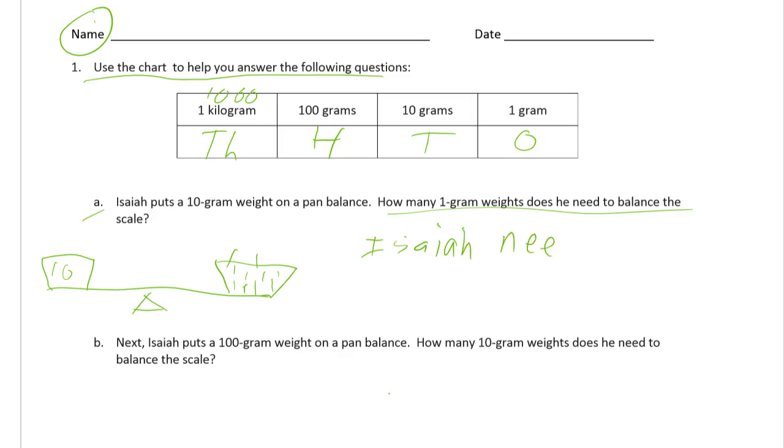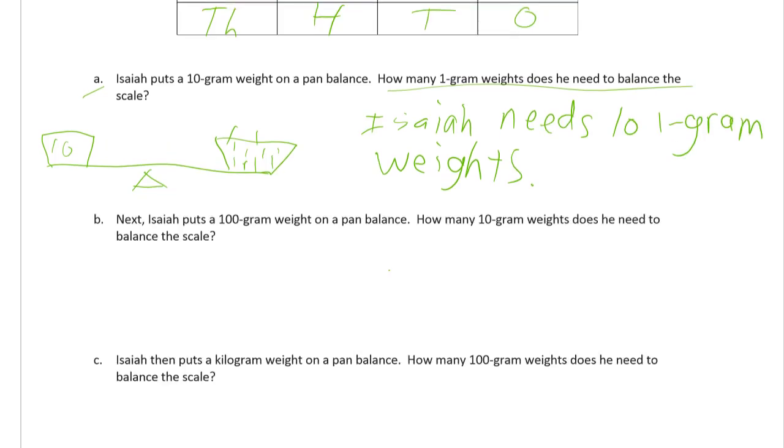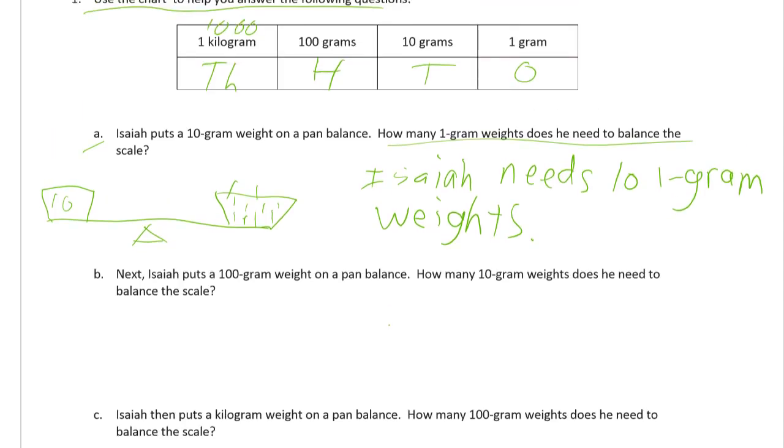Isaiah needs 10, 1 gram weights. Next, Isaiah puts a 100 gram weight on a pan balance. How many 10 gram weights does he need to balance the scale?